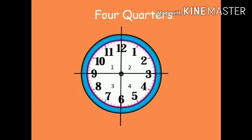If we divide the clock into 4 sections, we would have 4 quarters. Each quarter represents a 15-minute section. From 12 to 3 it is 15 minutes, the first quarter. From 3 to 6 it is 15 minutes, the second quarter. So it will be 15 plus 15, which is 30 minutes.